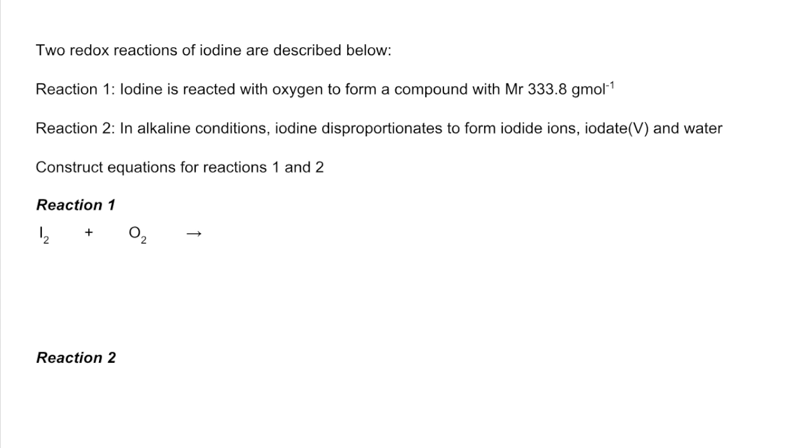If you think about the MR of iodine itself and establish how many I's it's got in, it's going to have two. One would mean you'd have to have a ridiculous number of oxygens to get the MR up to that number, and three is just too heavy. So we've got two I's. If we take that off the total MR we get 80.